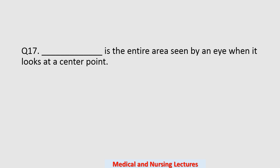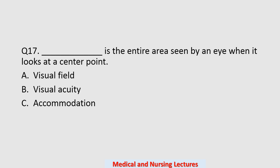Question number seventeen: blank is the entire area seen by an eye when it looks at a center point. Options are visual field, visual acuity, accommodation, or light refraction. The correct option is visual field.